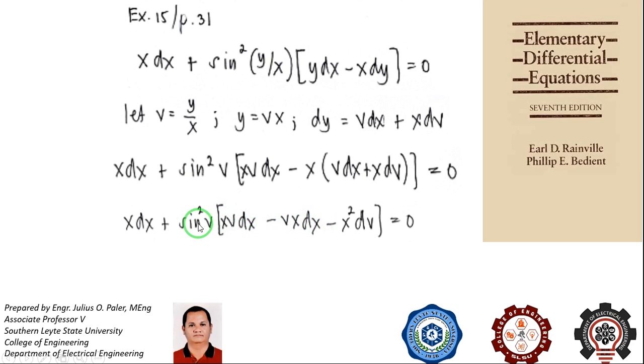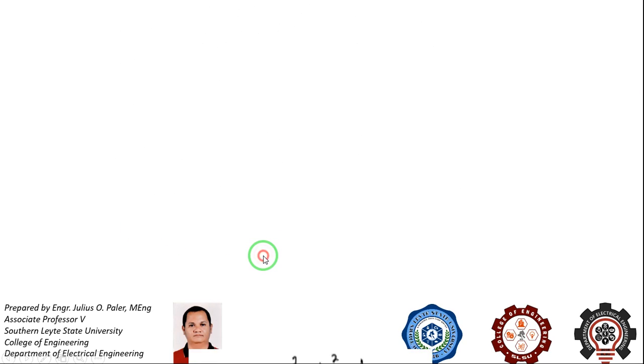So what remains in this term is sin squared of v times x squared dv minus xdx. So our next step is xdx minus x squared sin squared of v dv. Now separating the variables will give us 1 over x dx minus sin squared of v dv equal to zero.